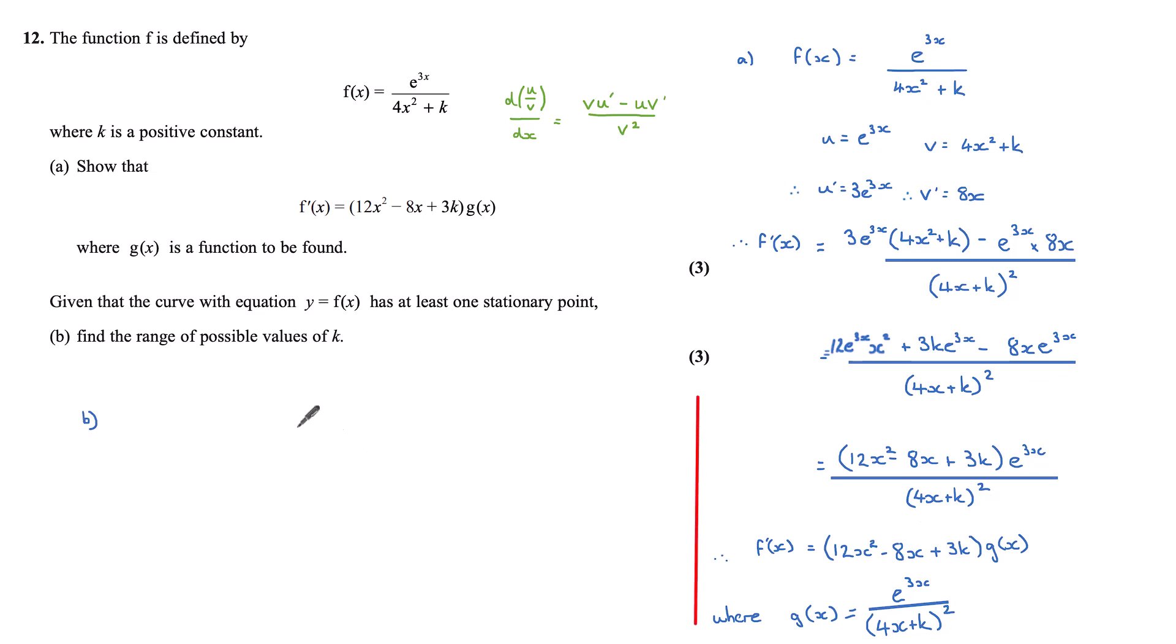Part b. Given that the curve with equation y equals f(x) has at least one stationary point, find the range of possible values of k.